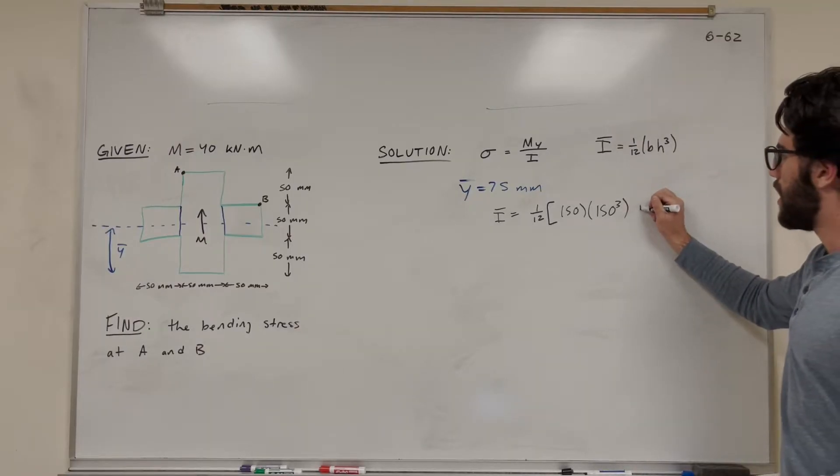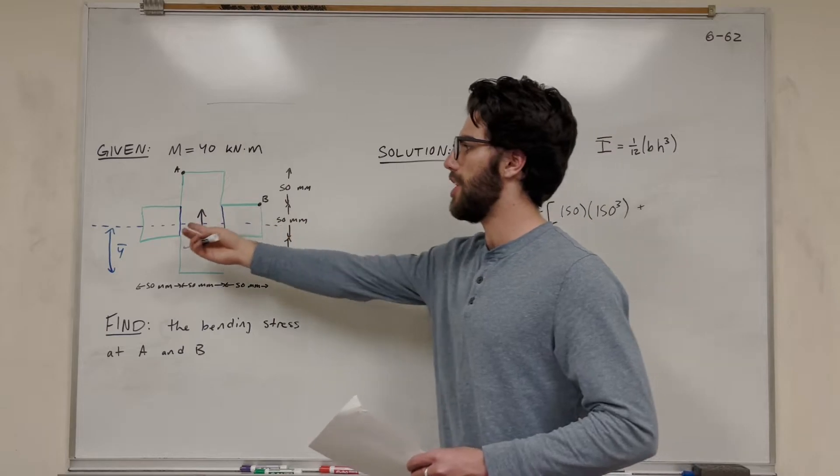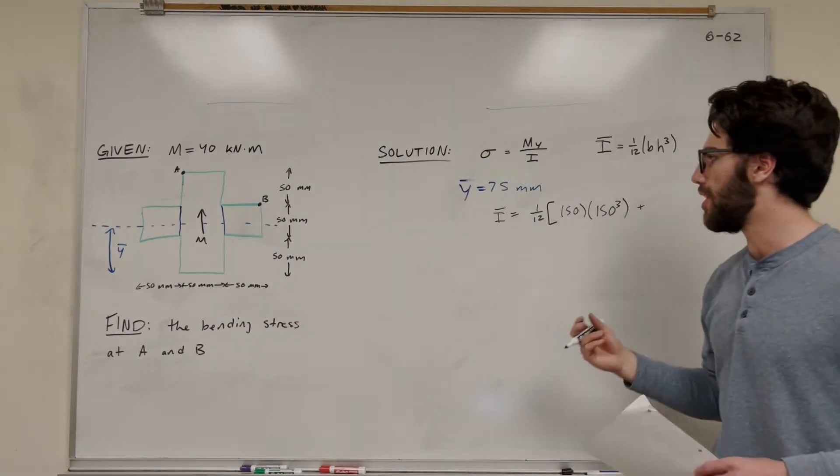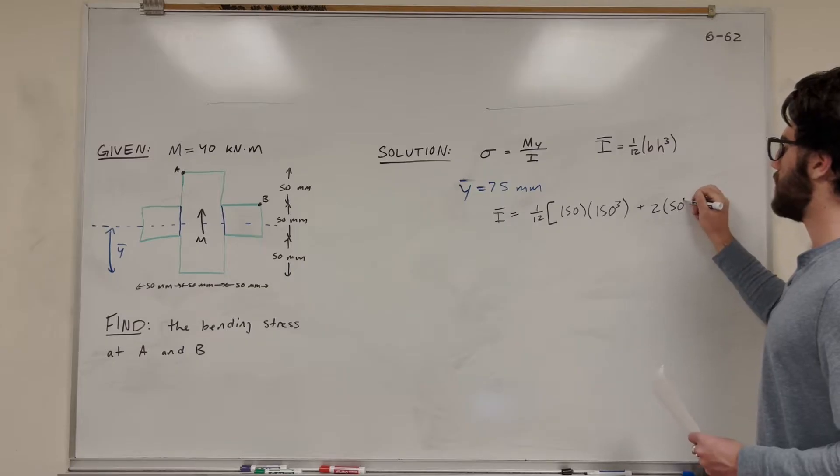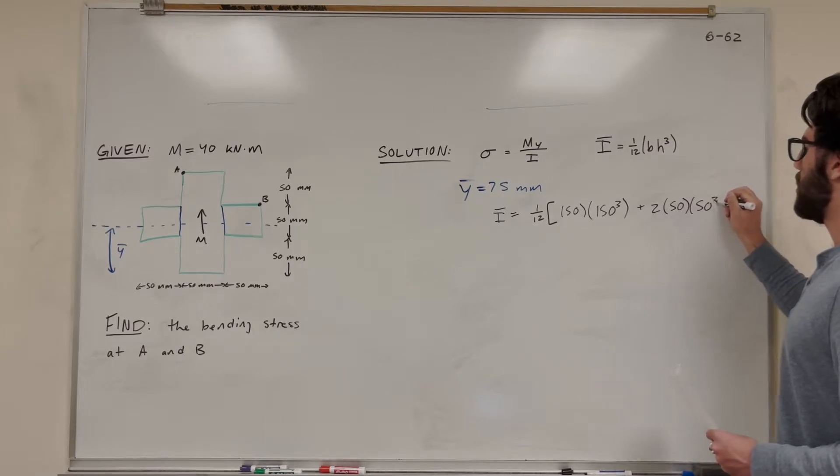And for the other two, we're going to add them. So we know that they're going to be the same. This shape and this shape. They're both going to have the same inertia, so we're going to do two. Then it's going to be base is 50, height is 50, so we're going to cube the 50.